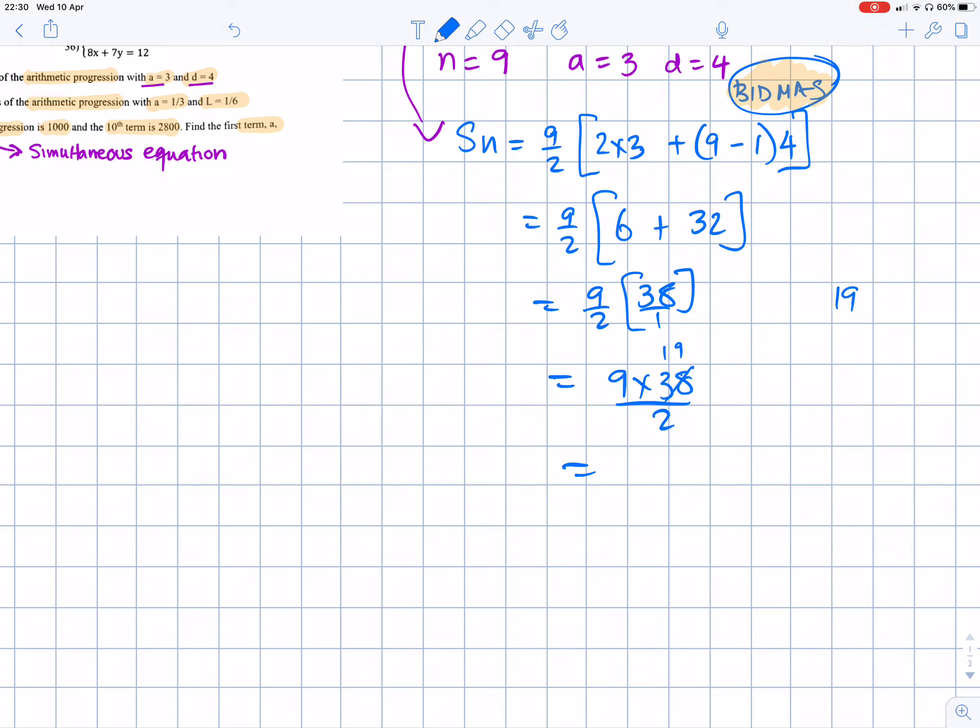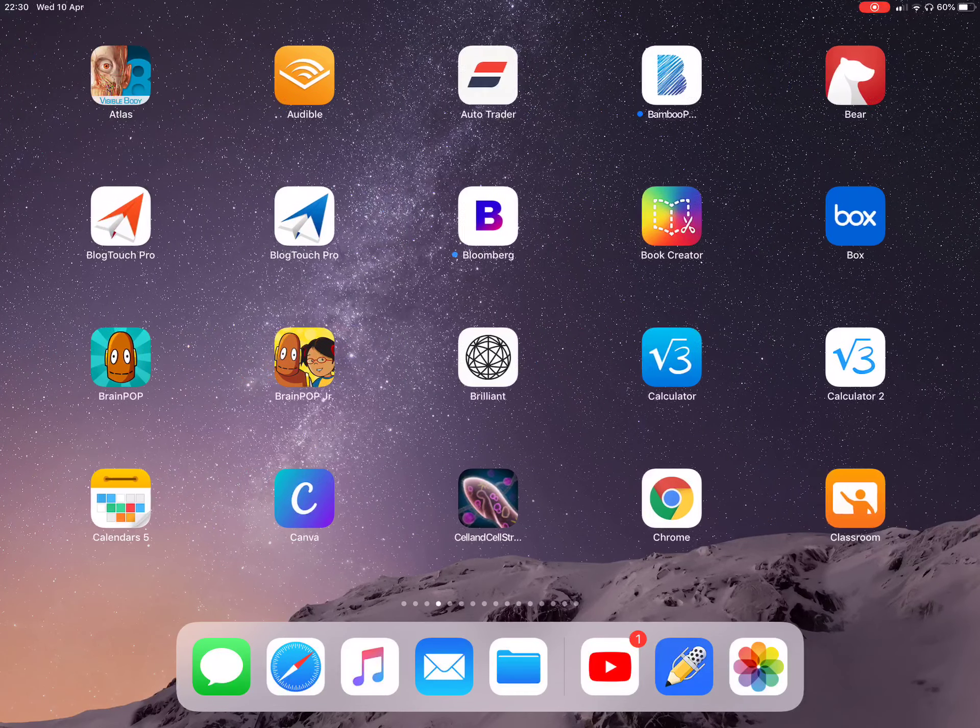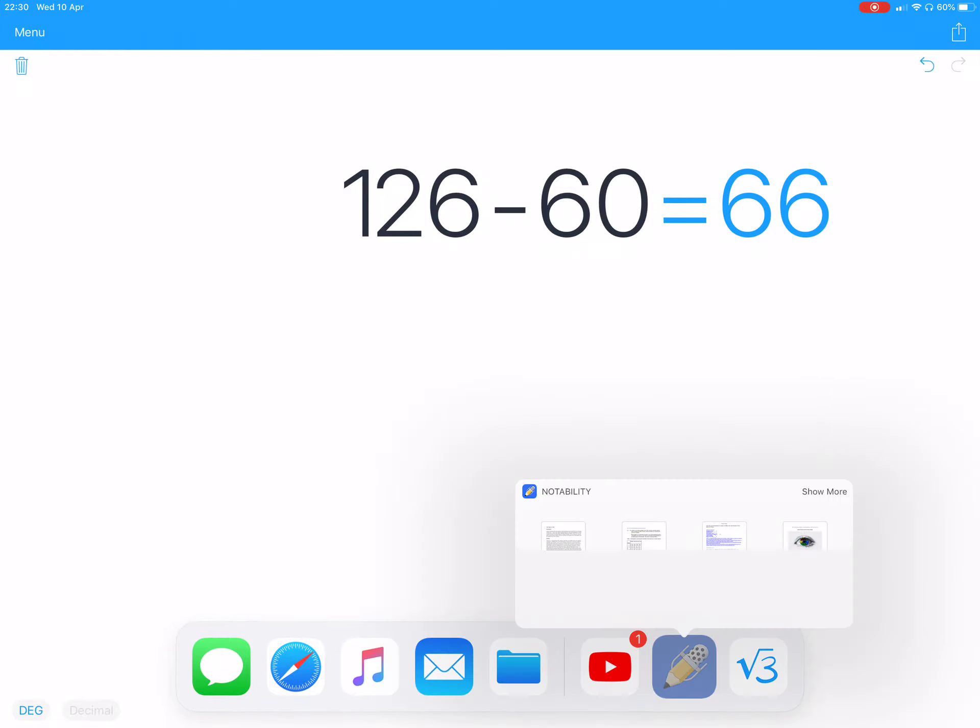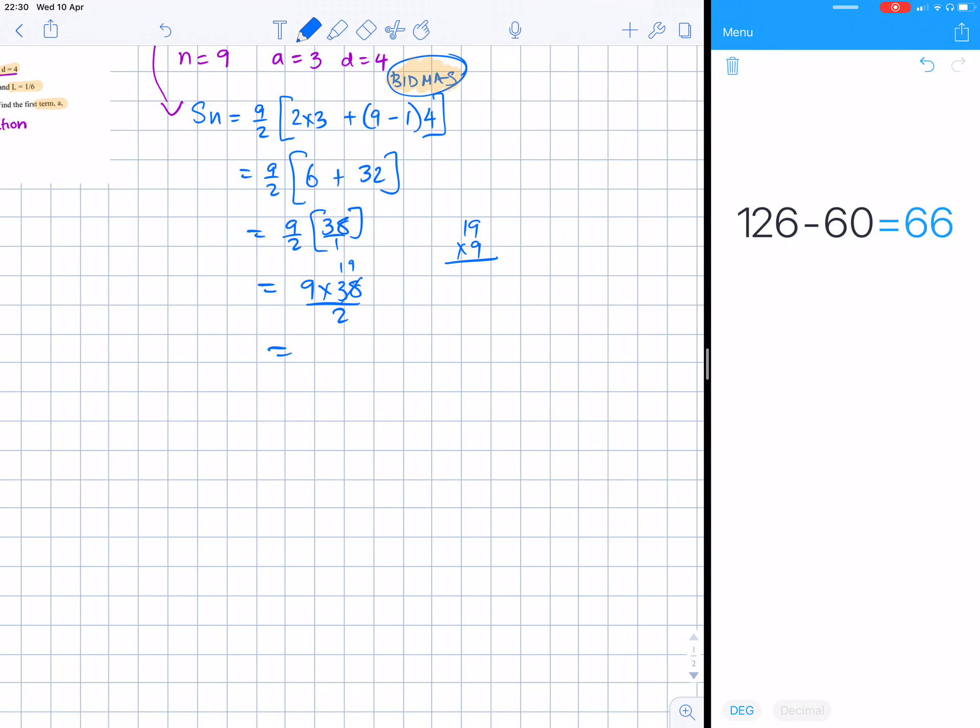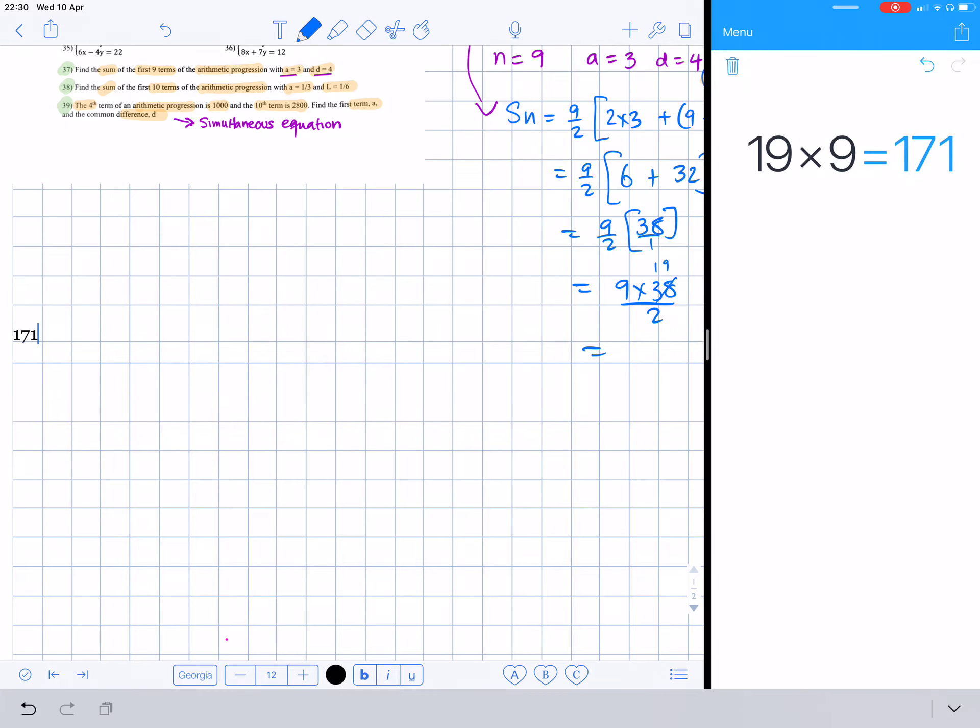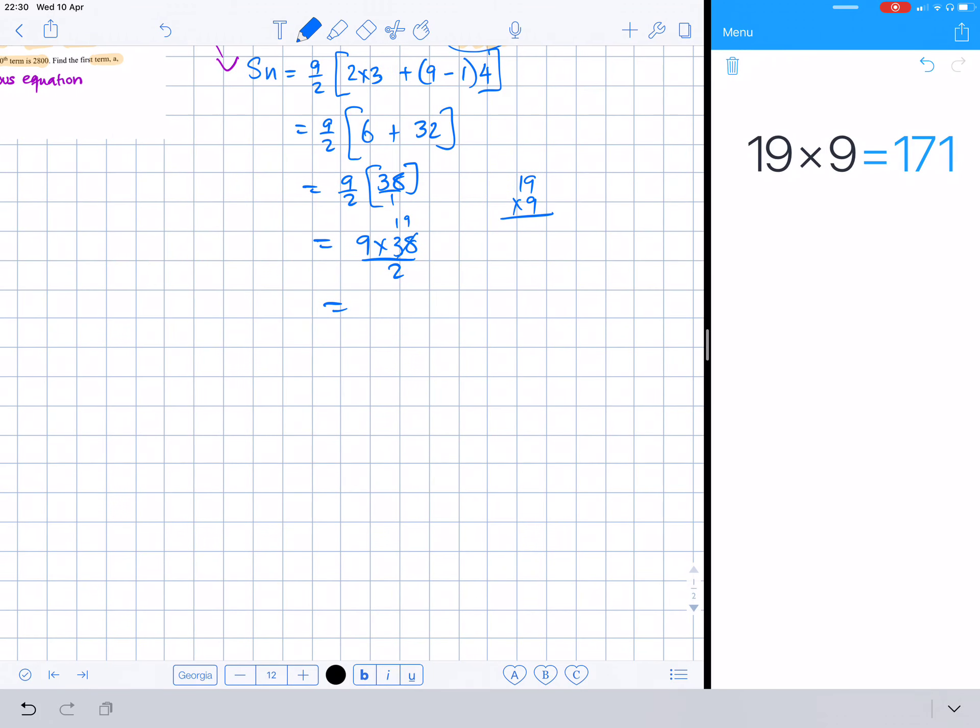So you have nine times thirty eight divided by two. Two into thirty eight is nineteen. So we're going to do nineteen times nine, which will give us 171. The answer is 171, so this is the sum for the first one.